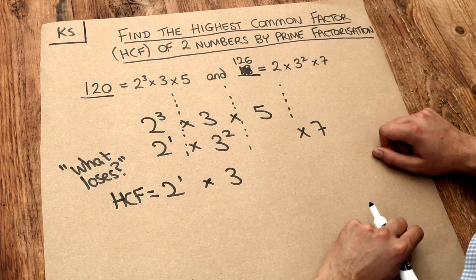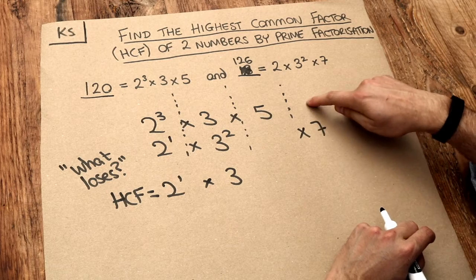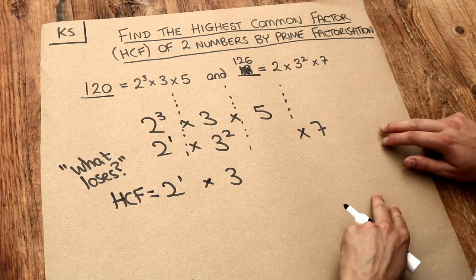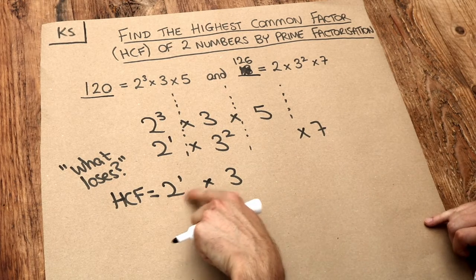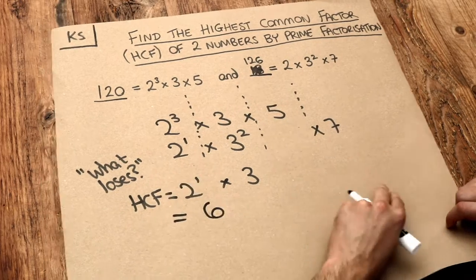Similarly, what loses out of nothing and seven? Nothing loses, so we just leave nothing there. We just end up with 2×3, and that is equal to 6.